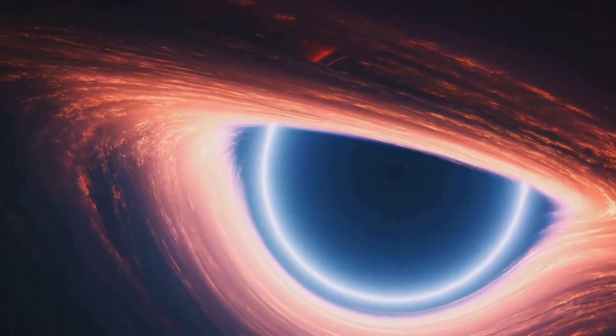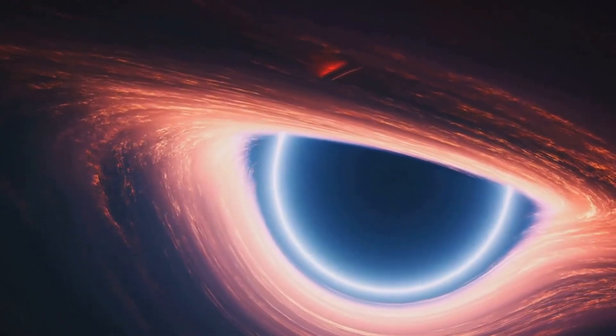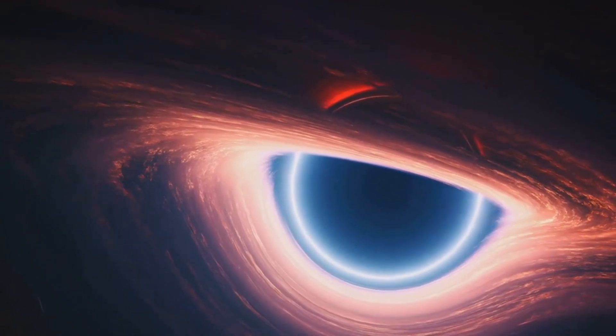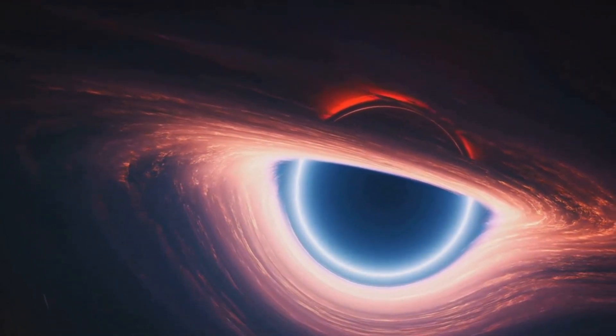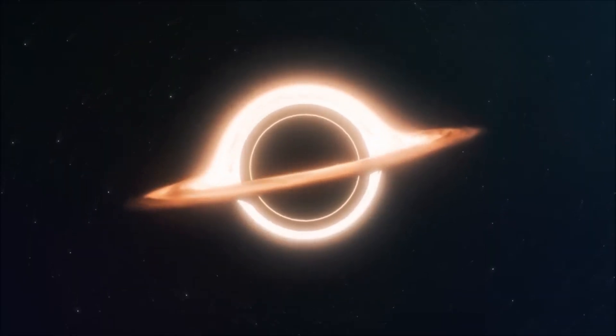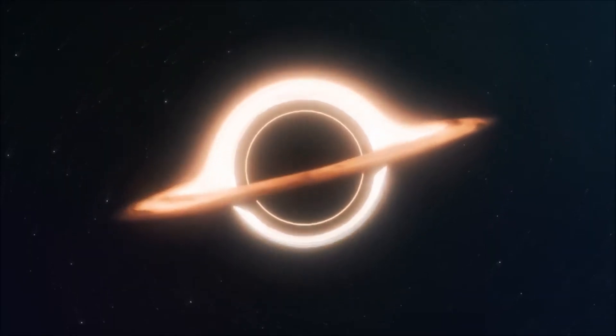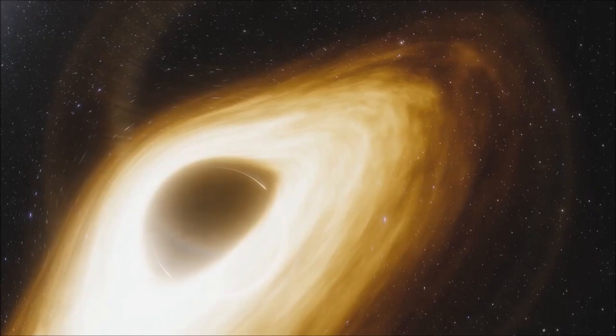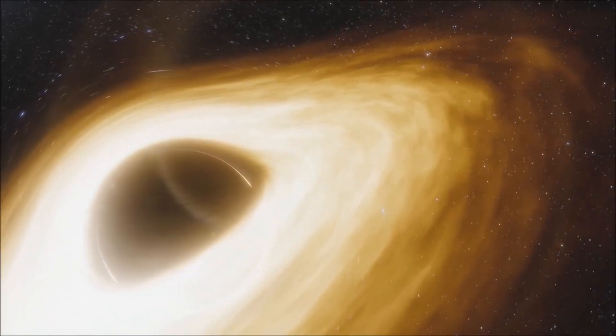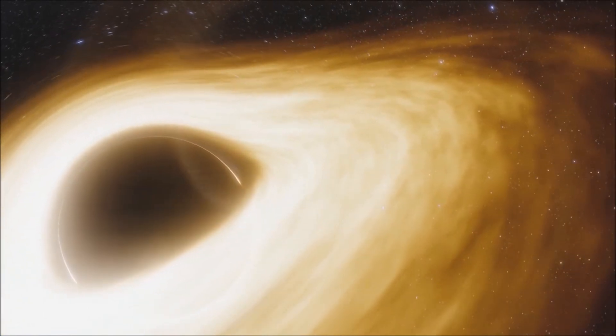If the black hole gobbles up the book, where does the information go? Does it get crushed to a singularity, spewed out in another universe? Or does it linger at the event horizon, the point of no return? This conundrum, this seeming contradiction between general relativity and quantum mechanics, is what we refer to as the information paradox, baffling scientists for decades.